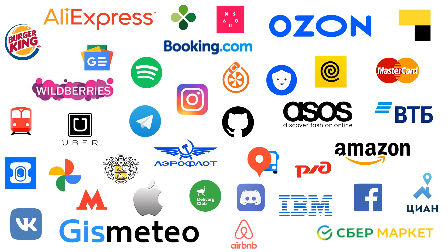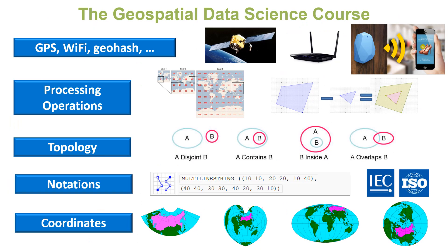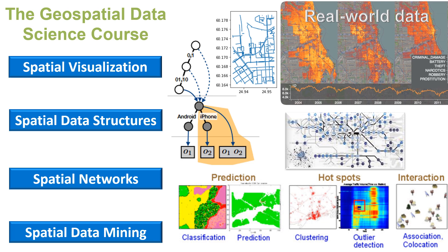The geospatial data science course includes topics on coordinate systems, standard notations, topology, processing operations, GPS, and other positioning types. In addition, it also covers spatial data mining, spatial networks, spatial data structures, and spatial data visualization.